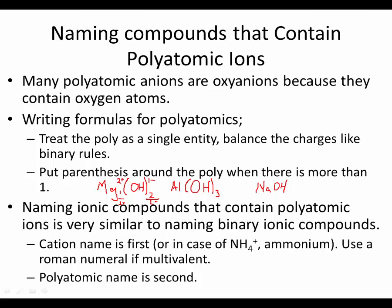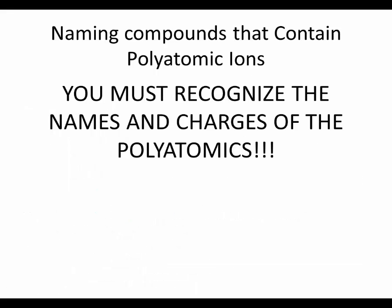Ammonium is a cation. So if we see ammonium somewhere, it's just going to go as the first thing, because the cation always goes first. And you're just naming them whatever the first guy is, it is. Whatever the second guy is, it is. It's just that the polyatomics have particular names. You must recognize the names and charges of the polyatomics. So the 11.